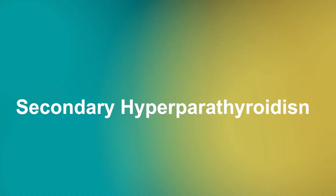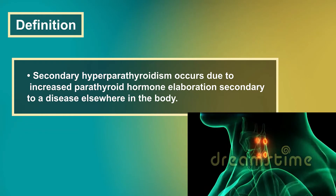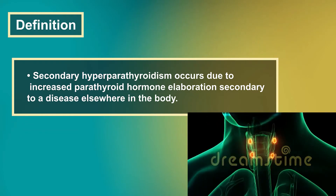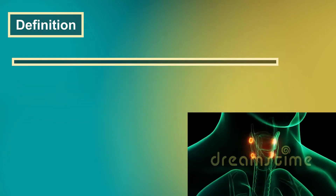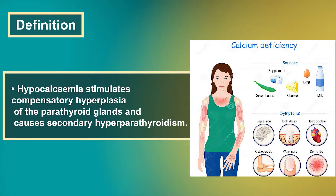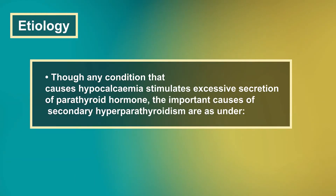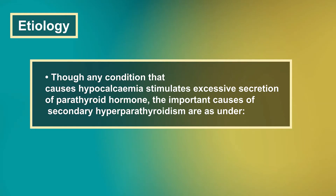Secondary hyperparathyroidism occurs due to increased parathyroid hormone elaboration secondary to a disease elsewhere in the body. Hypocalcemia stimulates compensatory hyperplasia of the parathyroid glands and causes secondary hyperparathyroidism. Any condition that causes hypocalcemia stimulates excessive secretion of parathyroid hormone. The important causes of secondary hyperparathyroidism are as follows.